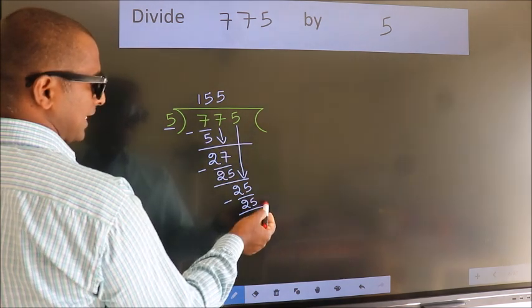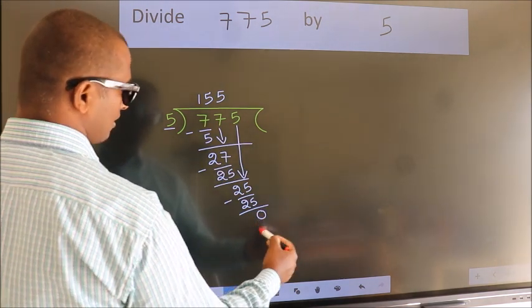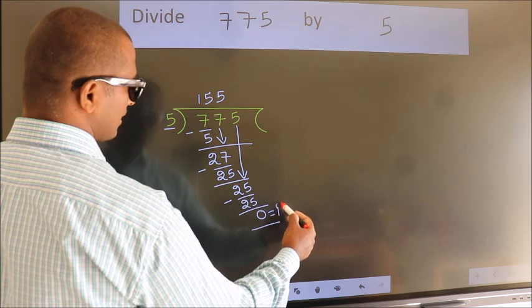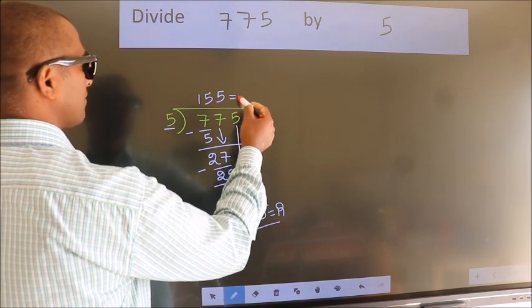No more numbers to bring it down. So, we stop here. This is our remainder. This is our quotient.